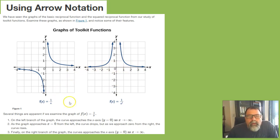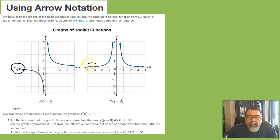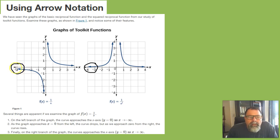This arrow notation is basically saying: on the left branch of the graph, the curve approaches the x-axis, y equals 0, as x goes to negative infinity. As you go to the left, the function is approaching y equals 0, which is the x-axis.